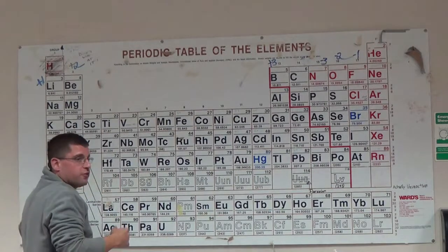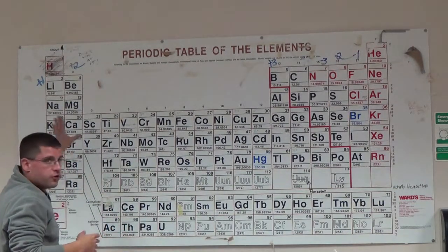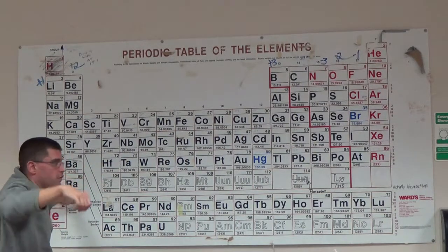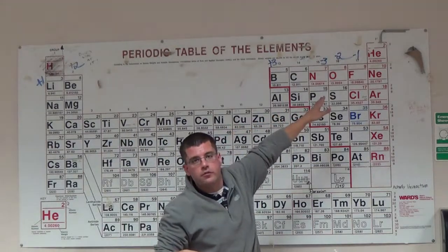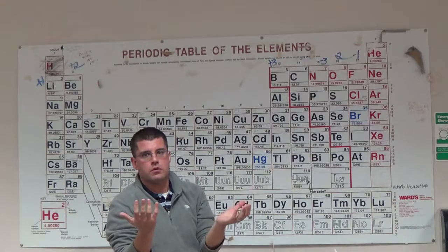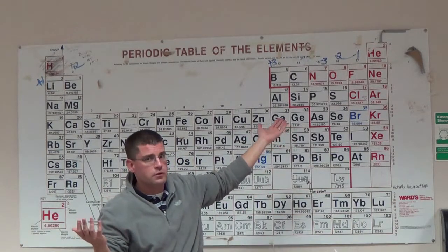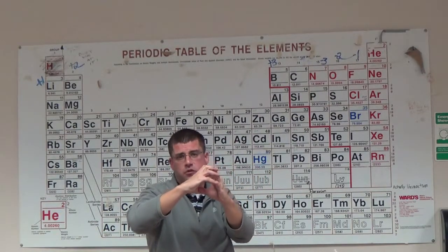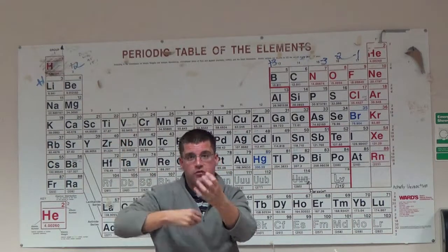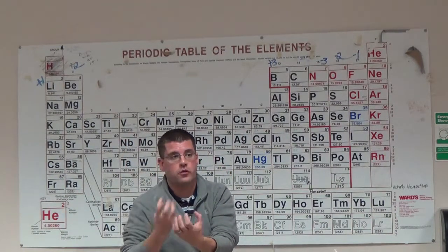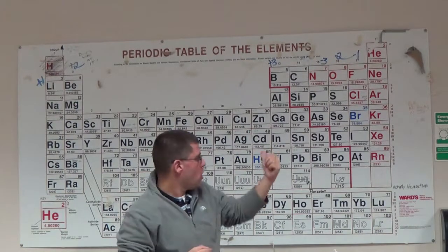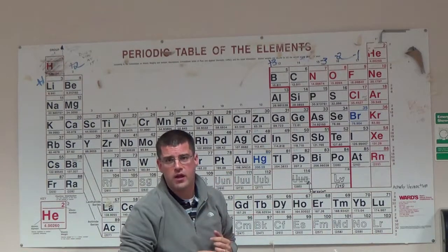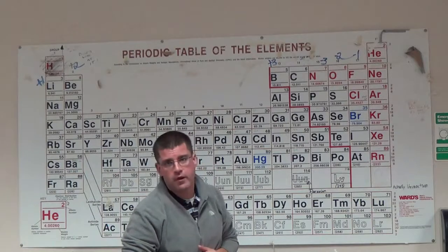The general trend for ionization energy: smallest over in the bottom-left region — farthest away from the nucleus, least attraction, least amount of energy required to remove an electron. As we go up and to the right, ionization energy increases, because those elements don't want to lose electrons, and as you move up, electrons are getting closer to the nucleus they're attracted to, requiring more energy to remove. Hopefully you found this helpful. I'll try to add more worksheets on ionization energy and periodicity. Let me know if you have any questions.